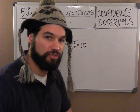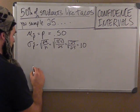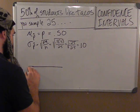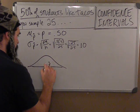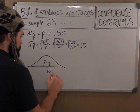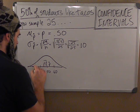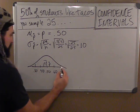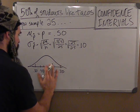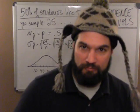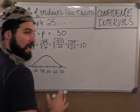So we can make a sampling distribution. If I went out and took a sample of size 25 over and over again, most of my P-hats will be near 50% because 50% of people like tacos. But sometimes I'll have a sample where more than 60% or less than 40% like tacos — sometimes even less than 30% or more than 70%. This is a pile of P-hats: P-hat, P-hat, P-hat.